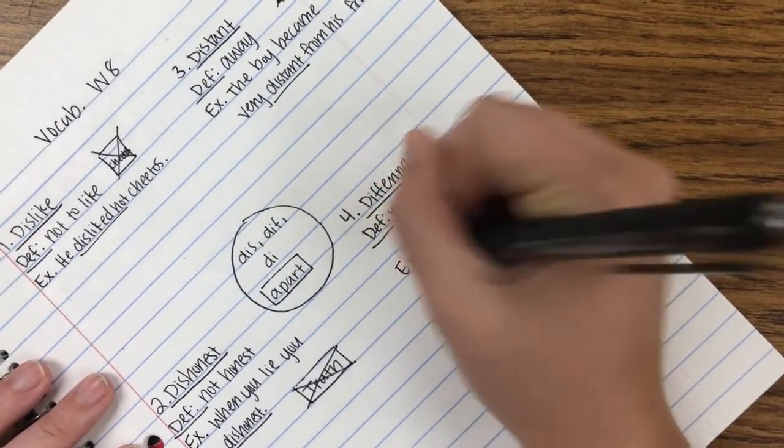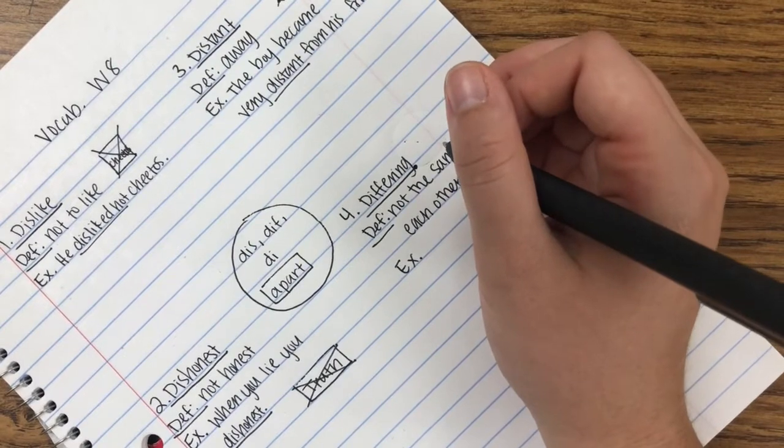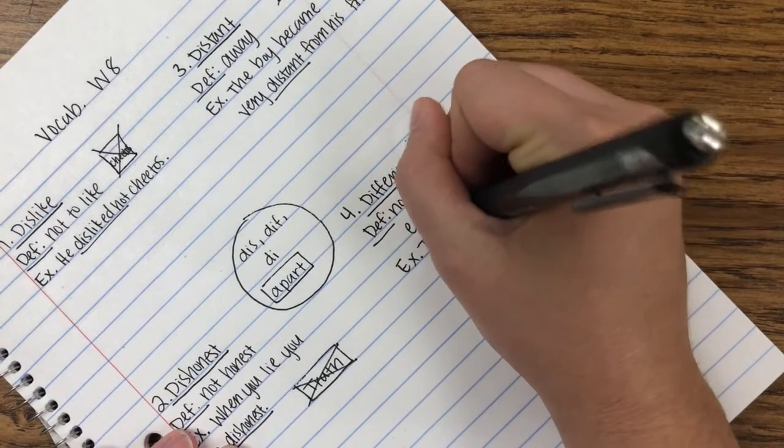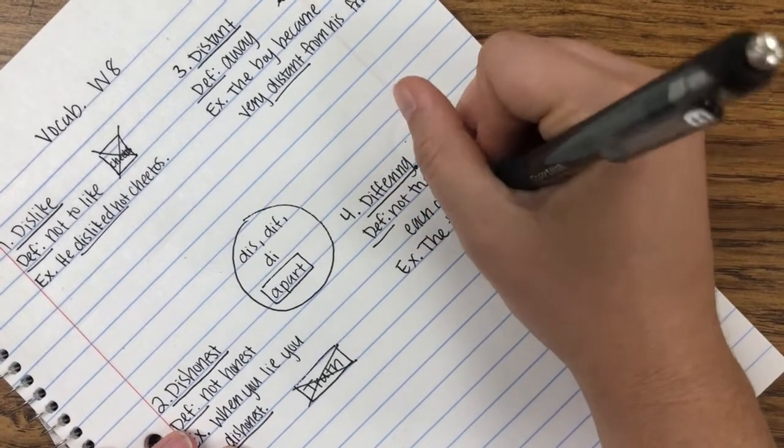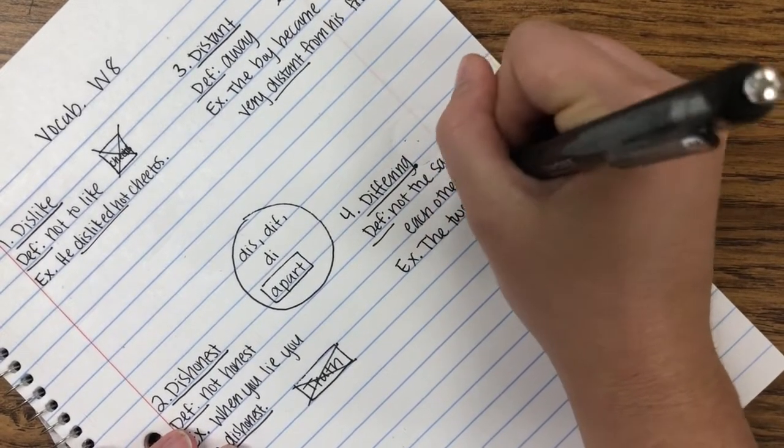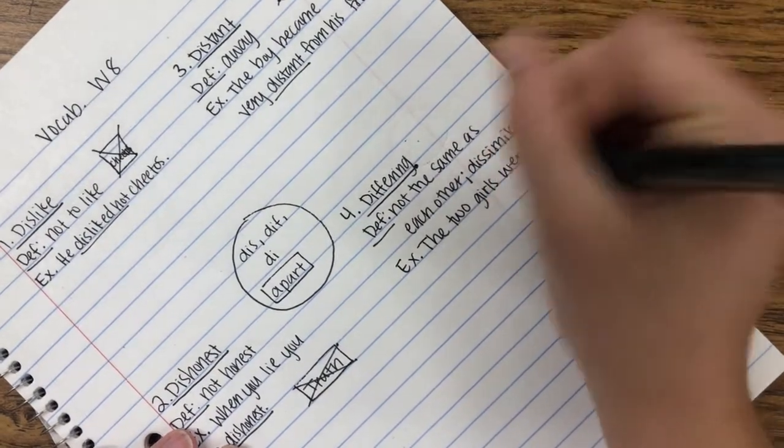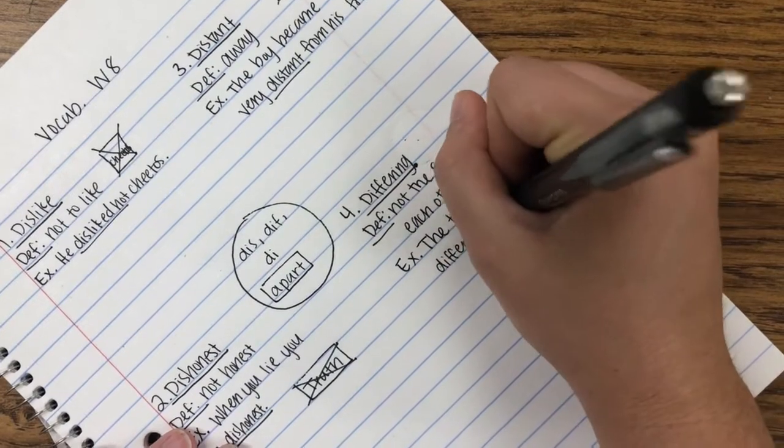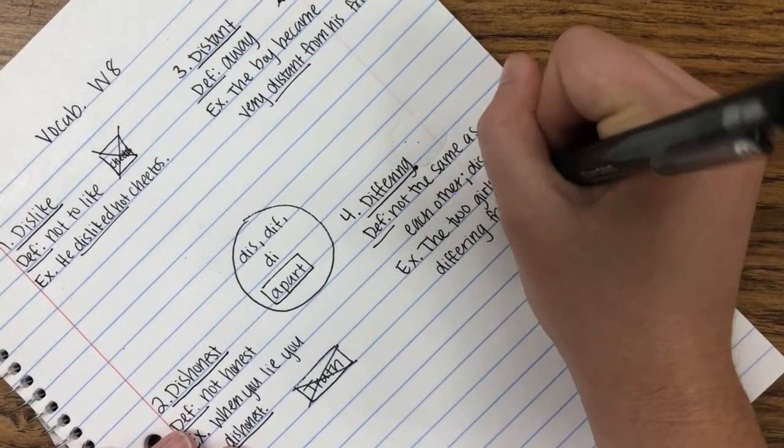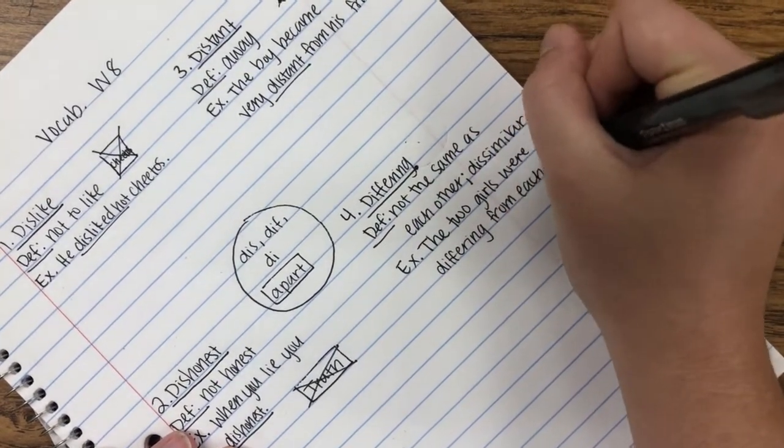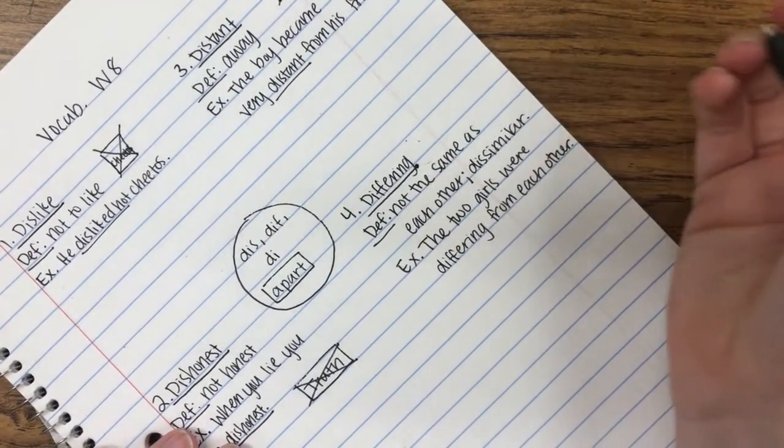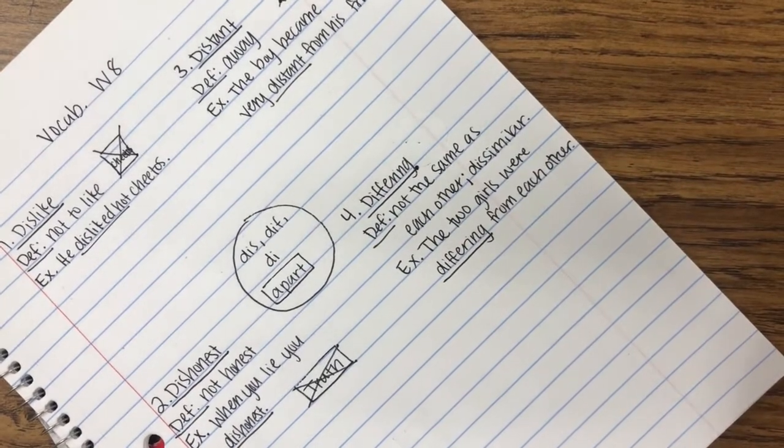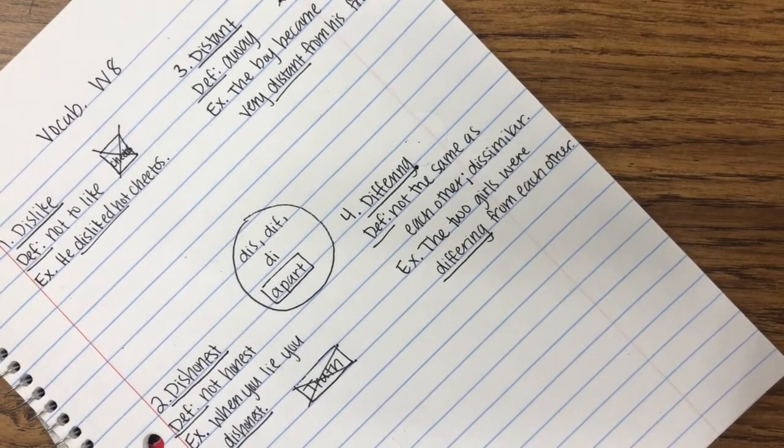In our example sentence, the two girls were differing from each other. The two girls were differing from each other. They were not the same as each other, right? So they were different.